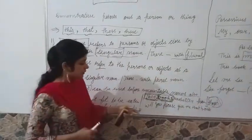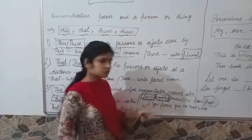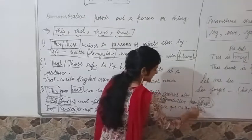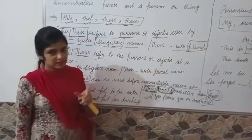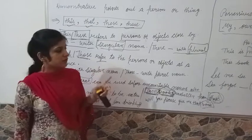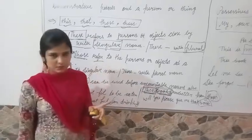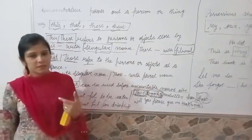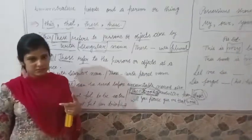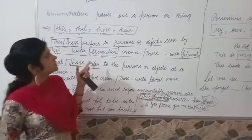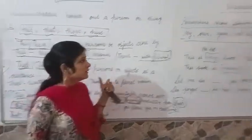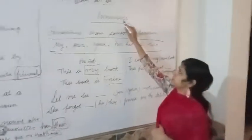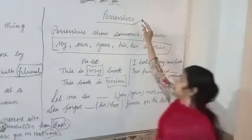'Will you please give me that book?' Here we are talking about one book only, that is why we use 'that.' Is the use of 'this,' 'that,' 'these,' and 'those' clear to you students? I will also give you one assignment related to demonstratives and articles.